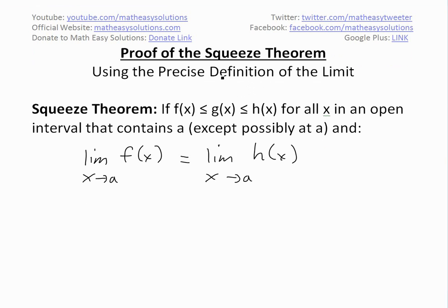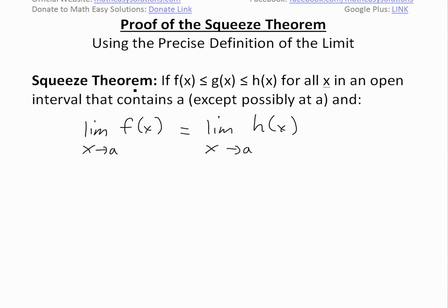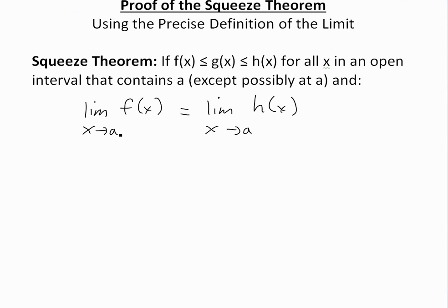I'm not going to go over too much on the examples and illustration, but I'm just going to go over the proof of the squeeze theorem using this definition. Just to recap first: if we're given that f(x) is less than or equal to g(x) and g(x) is less than or equal to h(x) for all x in an open interval — open interval just means that the endpoints you don't need to include — basically if it contains a number 'a', except possibly at 'a', and we're given that the limit as x approaches a of f(x) equals the limit as x approaches a of h(x), then we have to have the limit as x approaches a of g(x) equal to L.